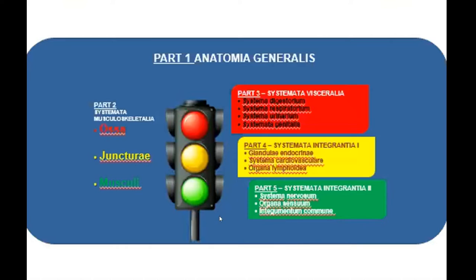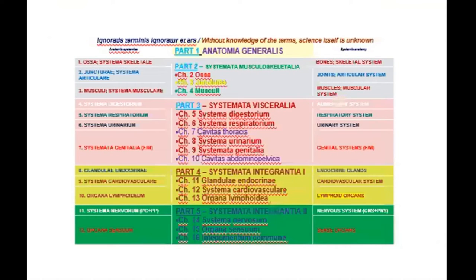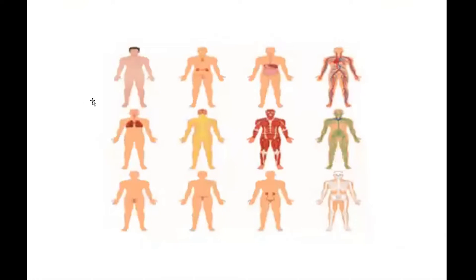What is the biggest organ in this structure shown in the slides? In your opinion, what is the biggest organ? The answer is skin. Skin is the biggest organ in the human body. It weighs more than two kilograms and covers more than two square meters, and has very important connections with the external environment.